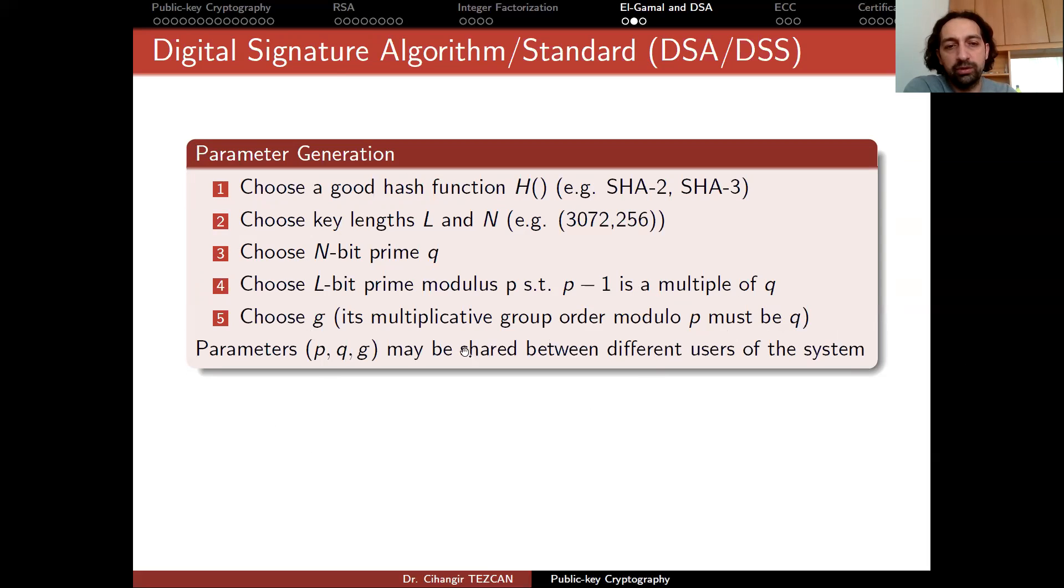So with these choices, your parameters become P, Q and G. And you can share this information with anyone you want. These are the parameters that you are going to use for digital signature.